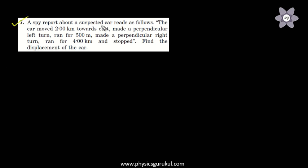A spy report about a suspected car reads as follows: the car moved 2 km towards east, made a perpendicular left turn, ran for 500 m, made a perpendicular right turn, ran for 4 km and stopped. Find the displacement of the car.